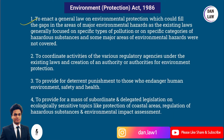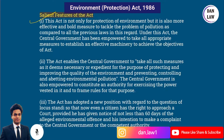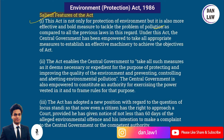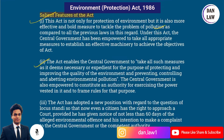There are some important definitions and salient features of this Act. This Act is not only for the protection of environment but is also a more effective and bold measure to tackle the problem of pollution compared to all previous laws. Under this Act, the central government has been empowered to take all appropriate measures to establish an effective machinery to achieve the objectives of this Act — as provided under Section 3, which we will discuss later.